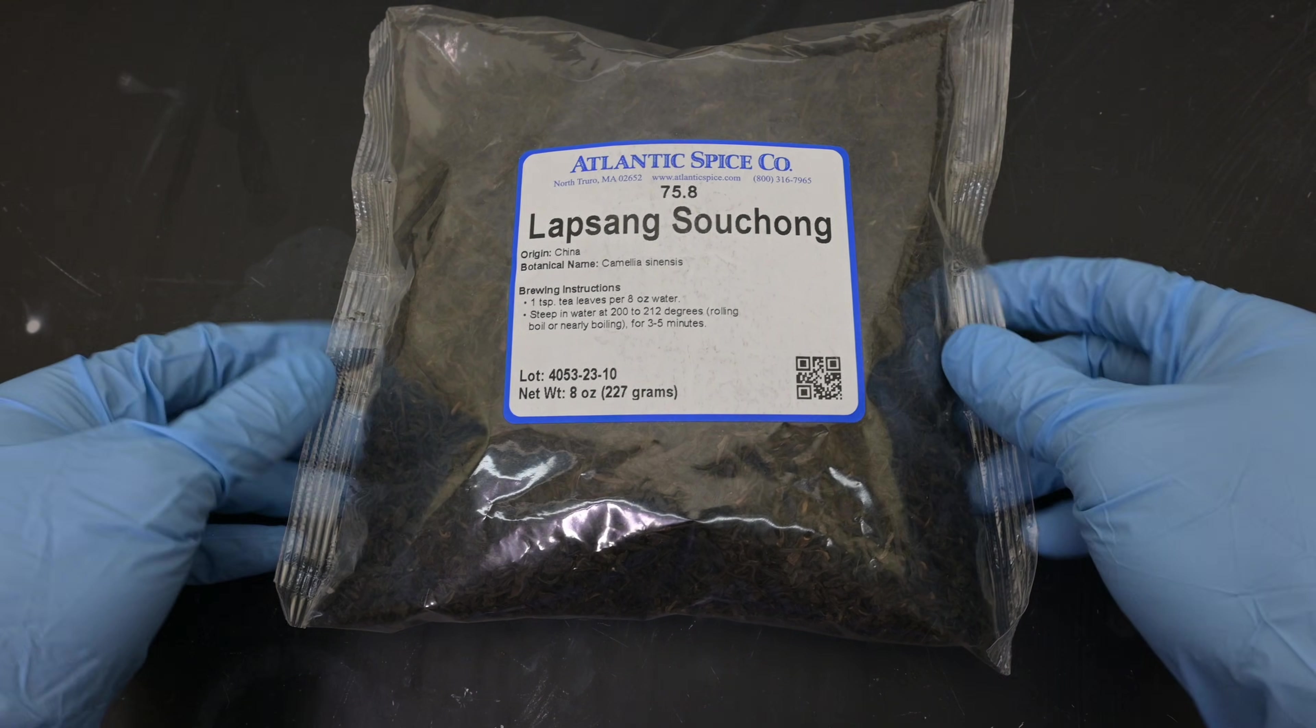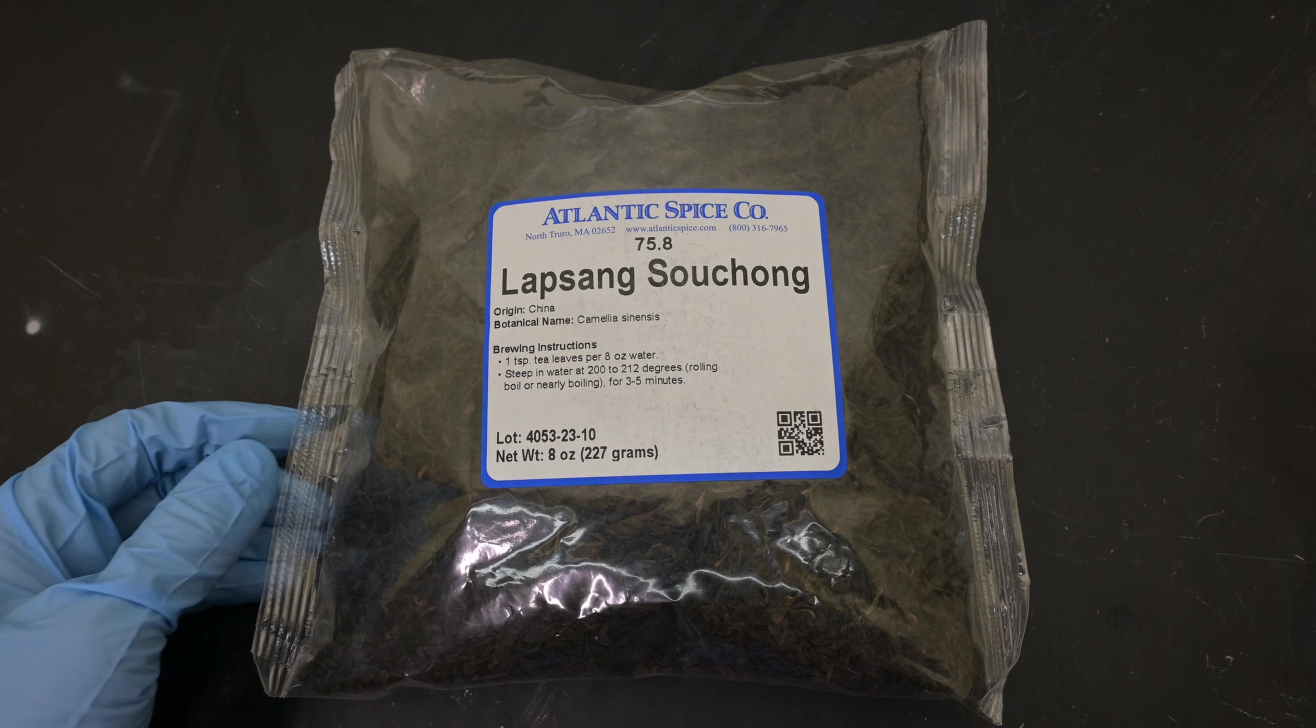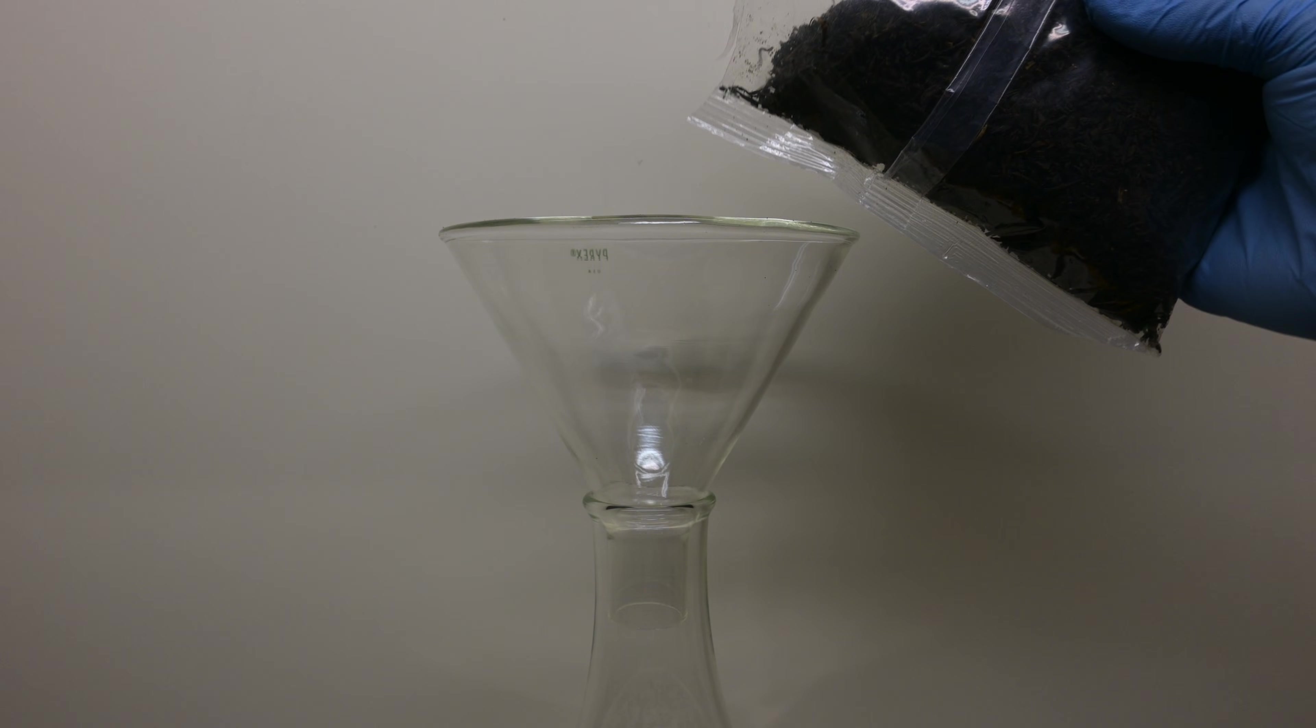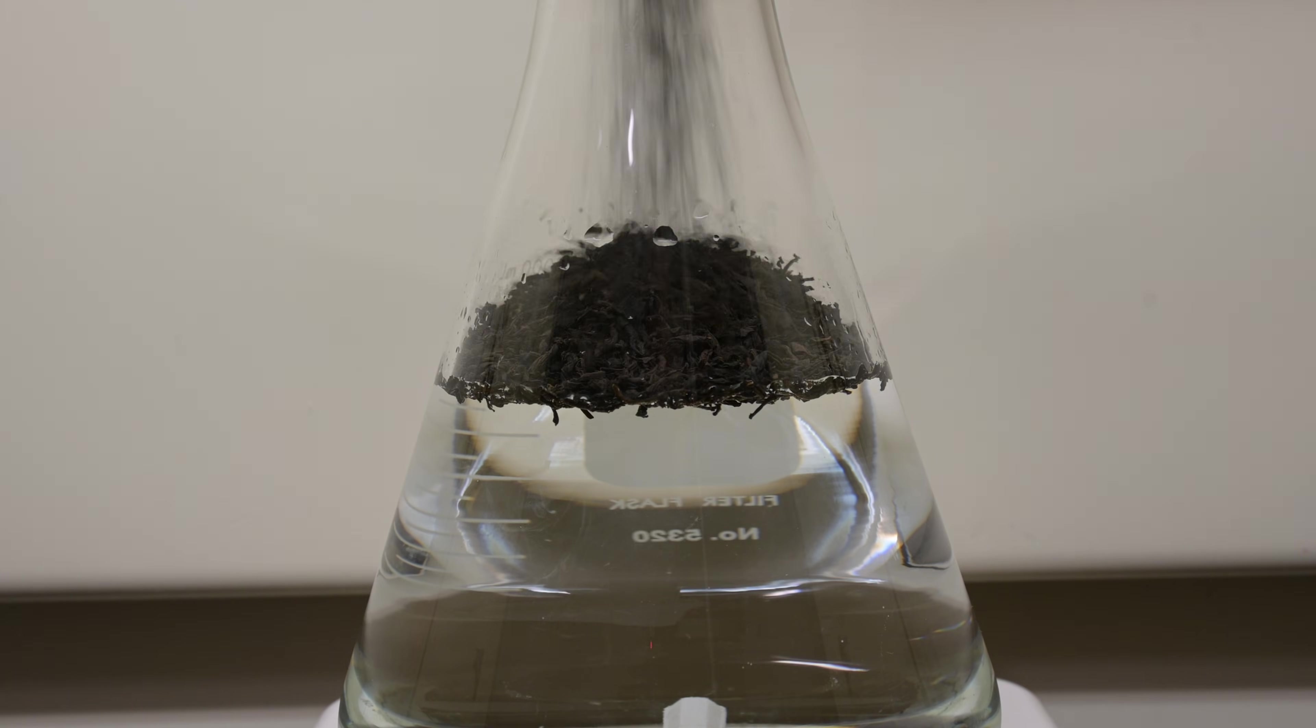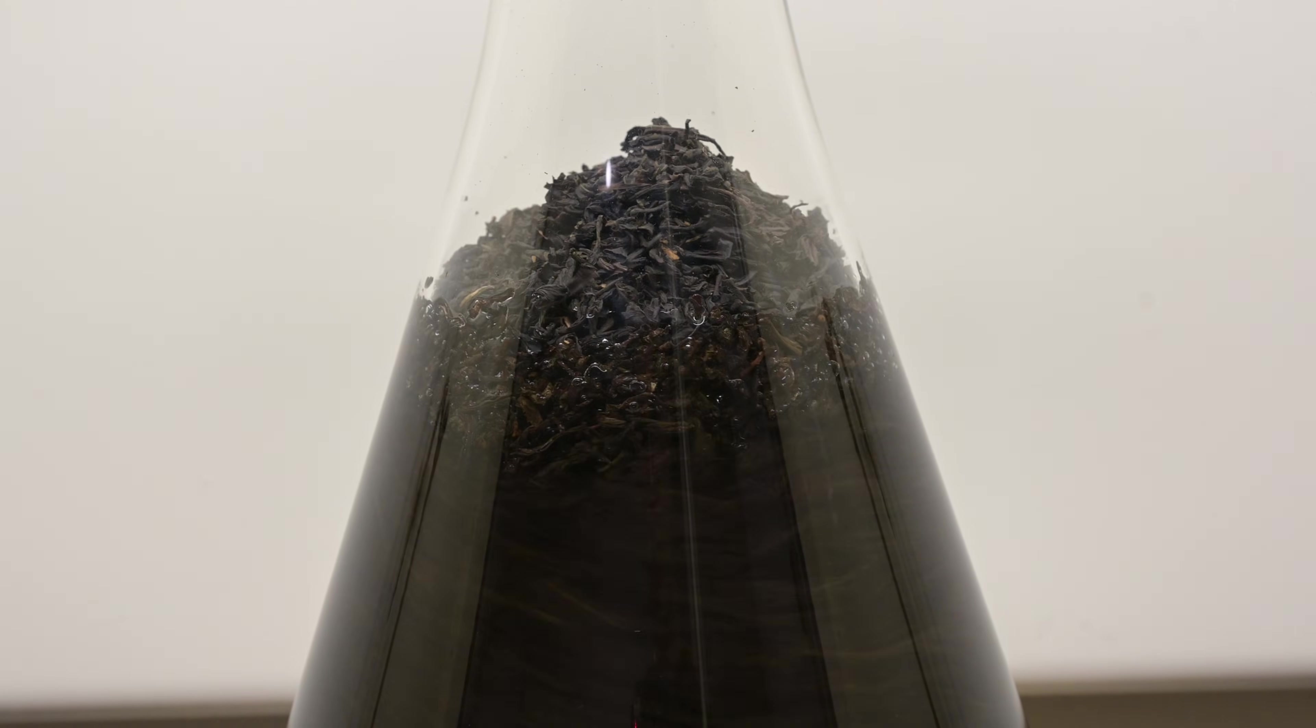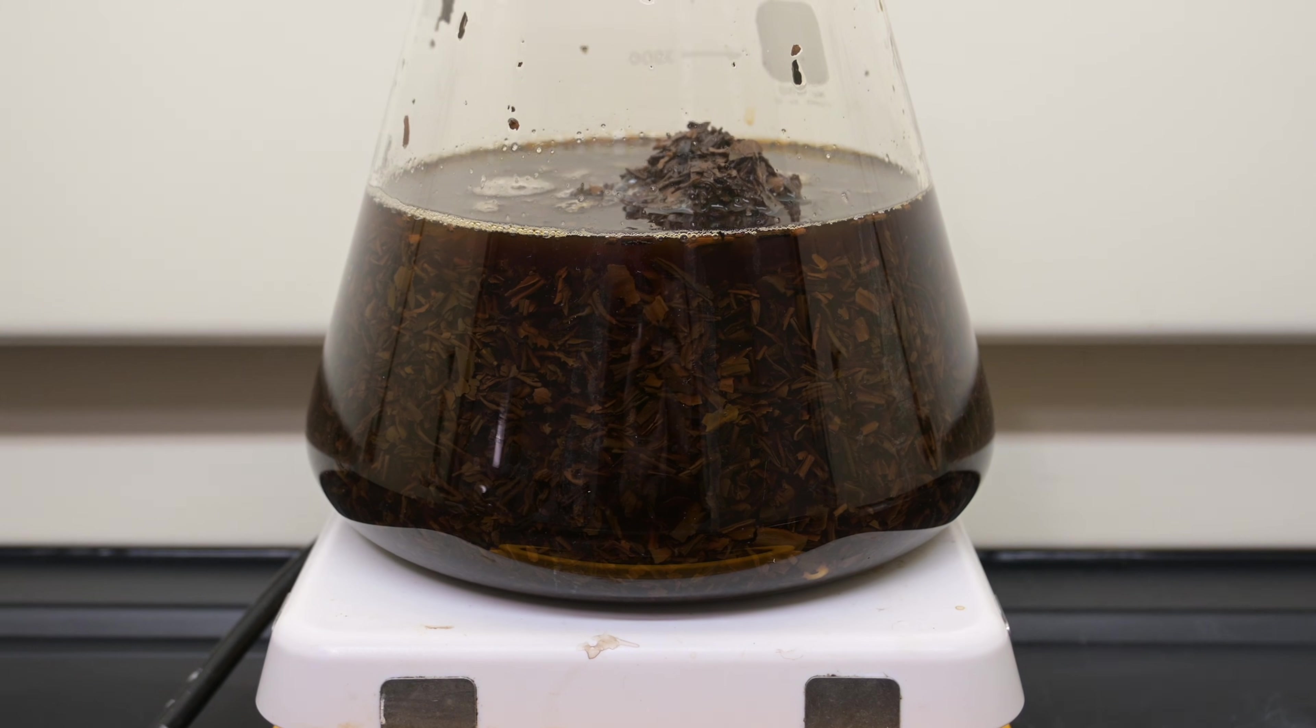First things first, we need a plant high in caffeine. Black tea contains some of the highest amounts of caffeine. Specifically, I will use Lapsang Souchong. I opened the bag of dried tea leaves and poured them into a flask. After transferring some of the tea leaves, I quickly noticed that I had grossly undersized my flask. After switching that out for a bigger one, we can continue.